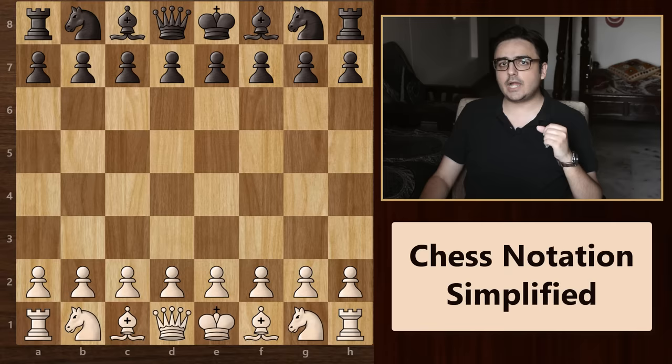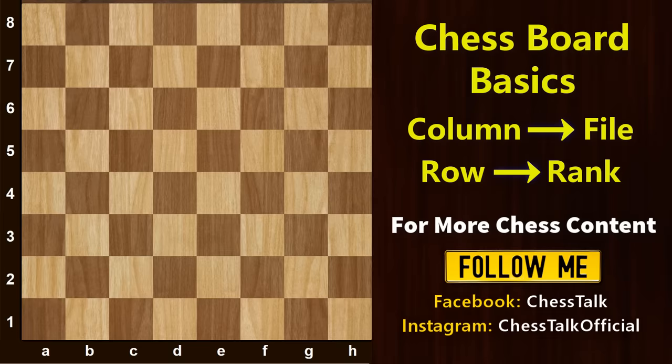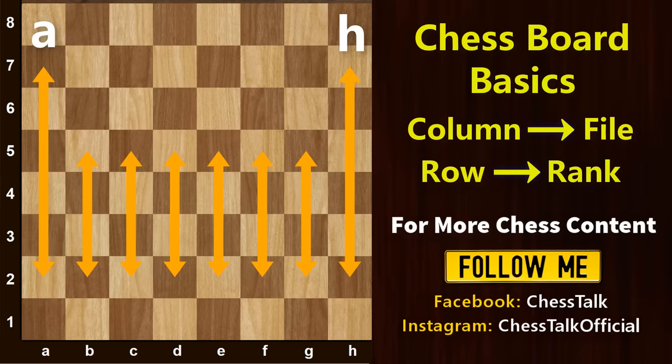So let's start with the absolute basics. Each column on the chessboard is called a file, and each row is called a rank. Every file on the chessboard is given a letter, starting with the letter A on the left side of the board and going all the way to the letter H on the right side of the board. Each rank is assigned a number from 1 to 8, just like you see here.